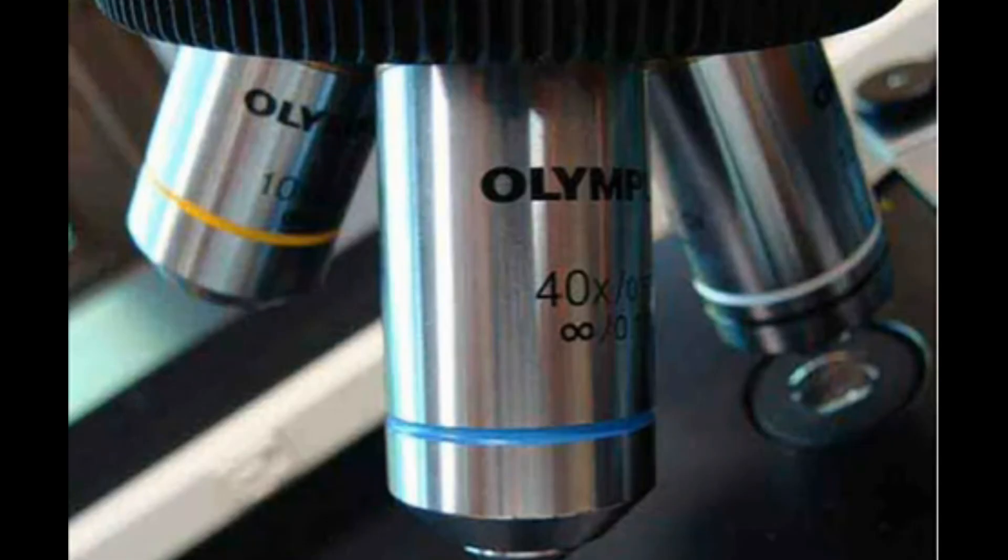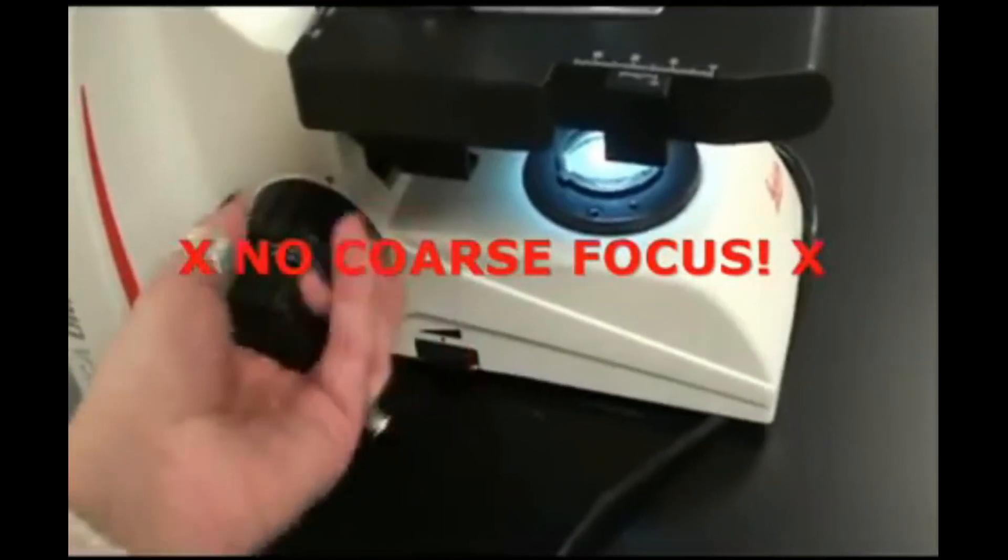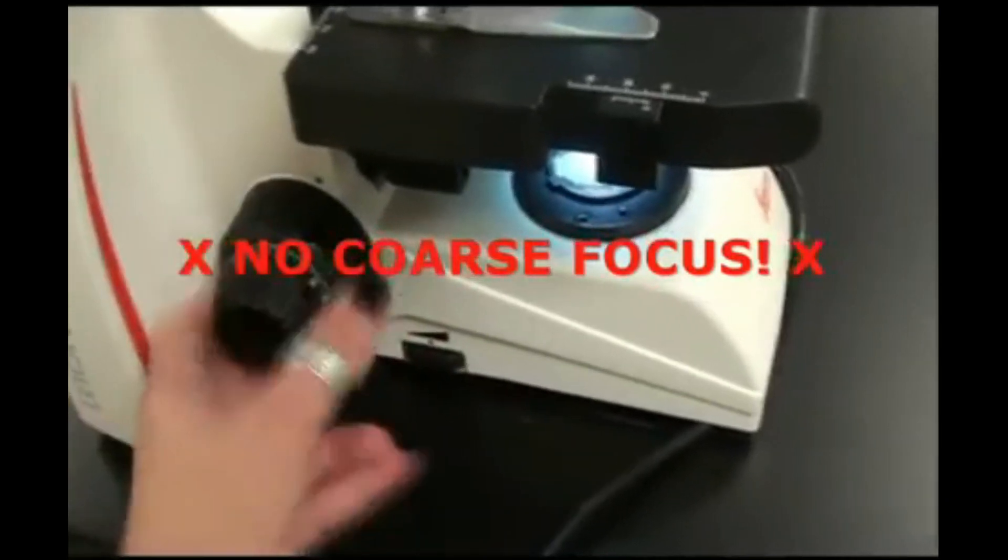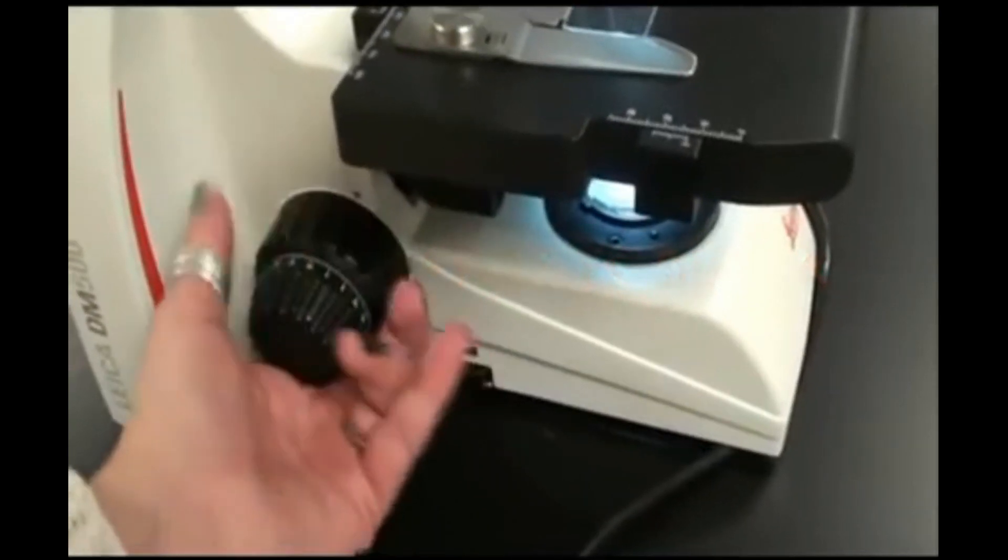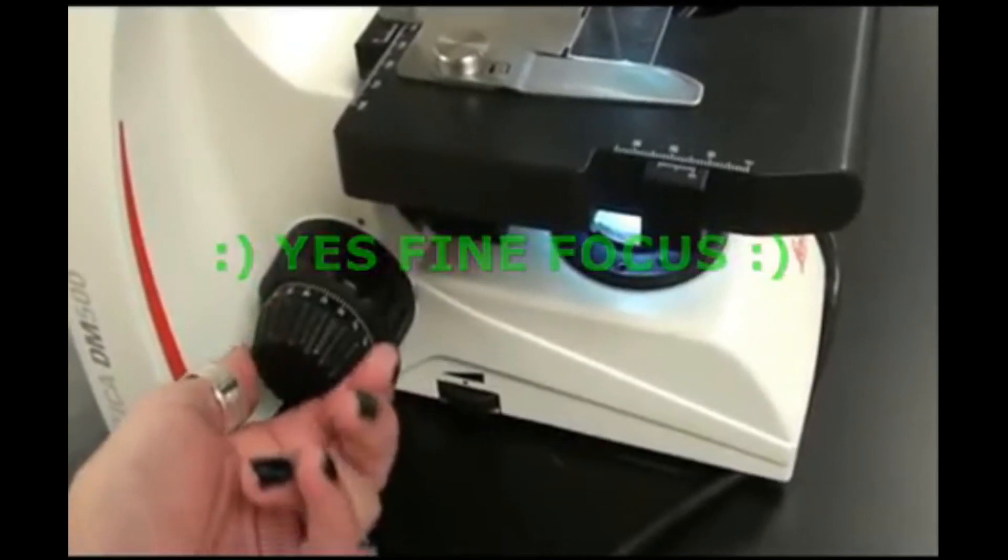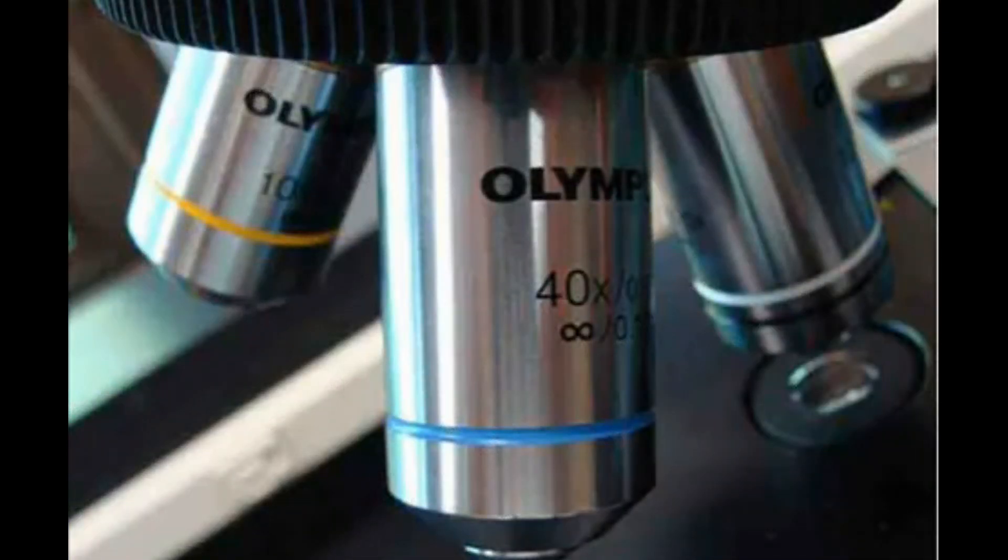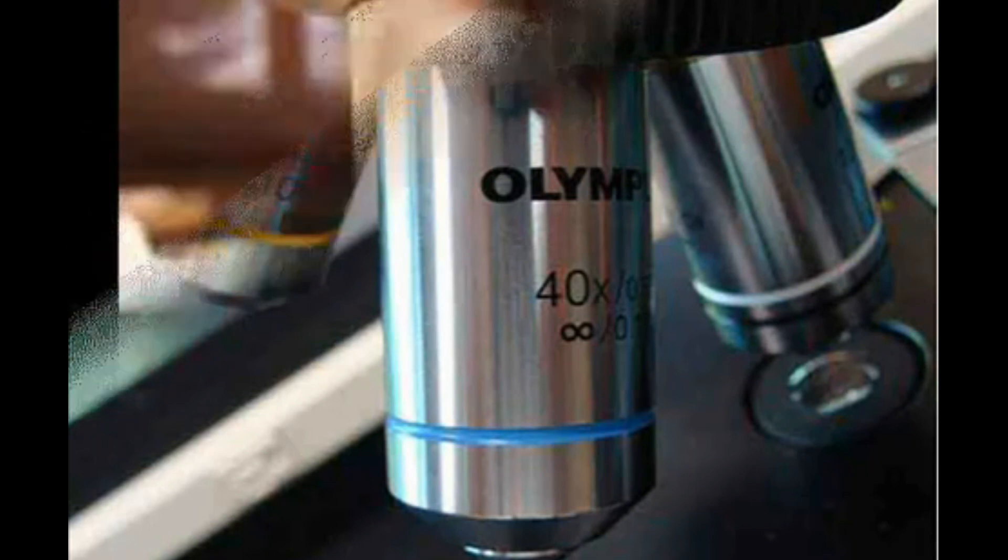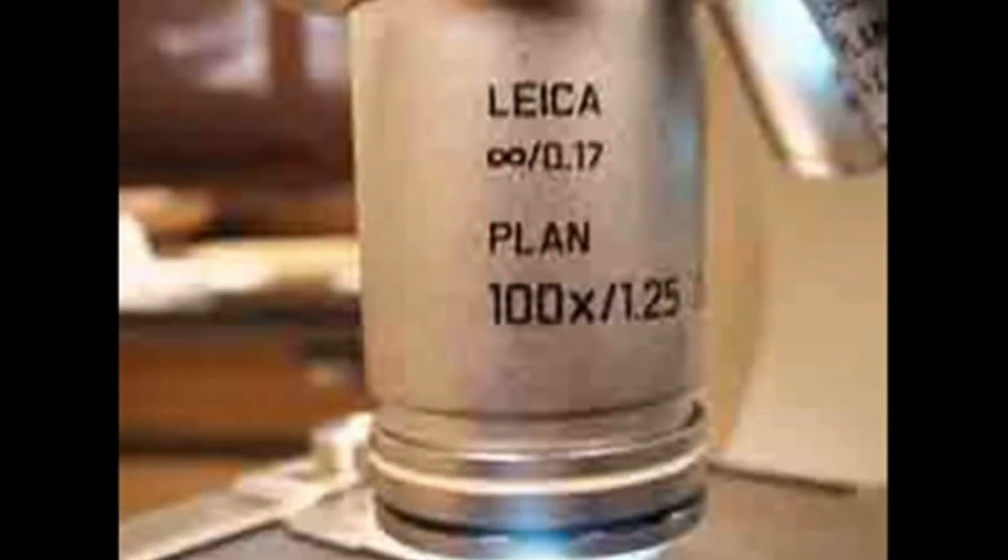An important warning. Whenever you are using your high dry objective or your oil immersion objective, these are your two longest lenses. Never adjust the coarse focus. When you are using these longer lenses, you are only allowed to use the fine focus, again, that knob that is set within the coarse focus knob. Manipulating the coarse focus when using these longer objective lenses will at the very least take your specimen out of focus immediately, and worst case scenario, could smash the lens into the slide, damaging the microscope.